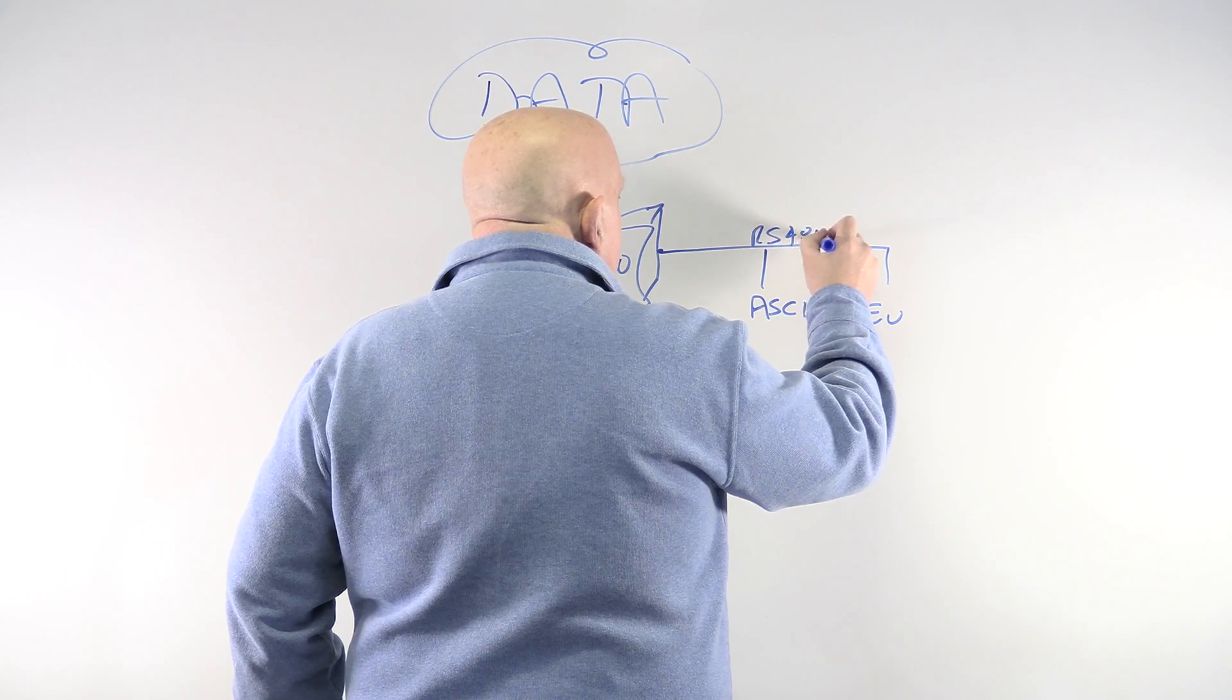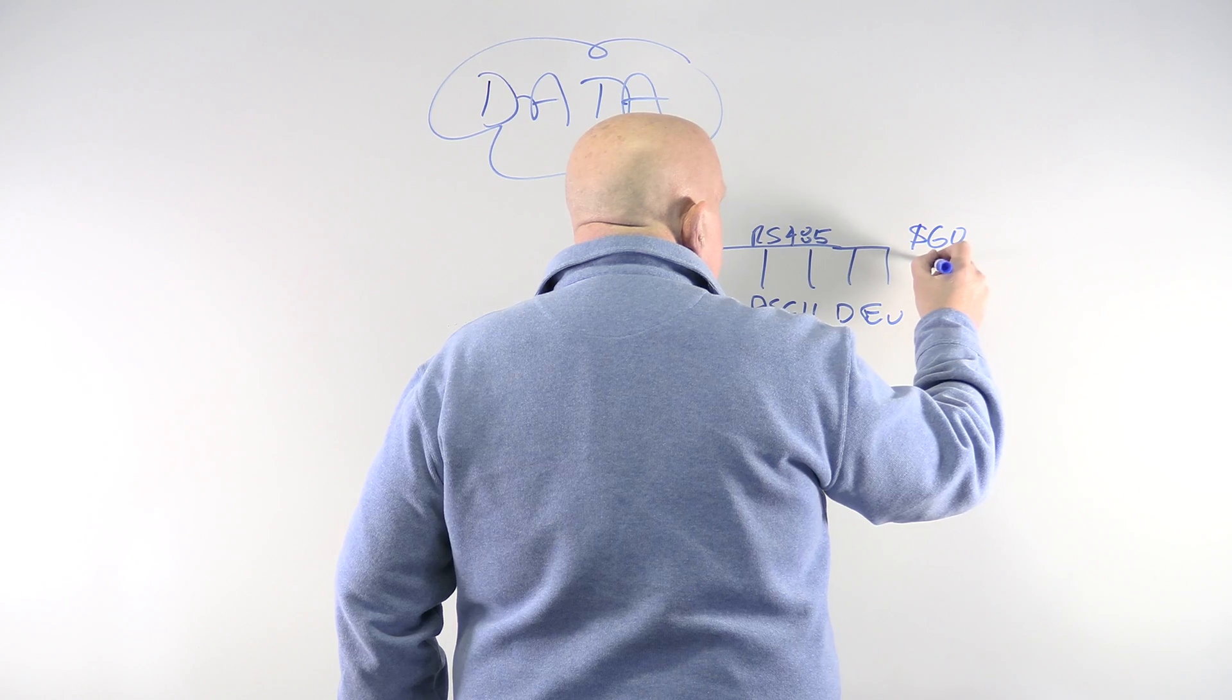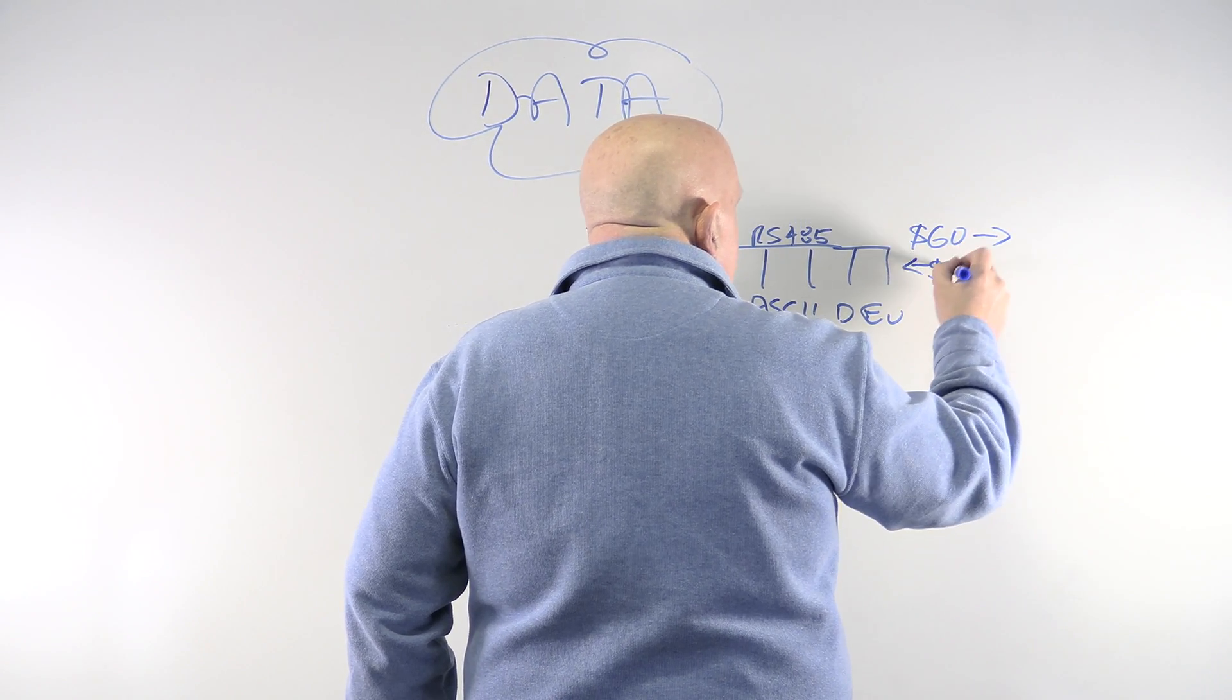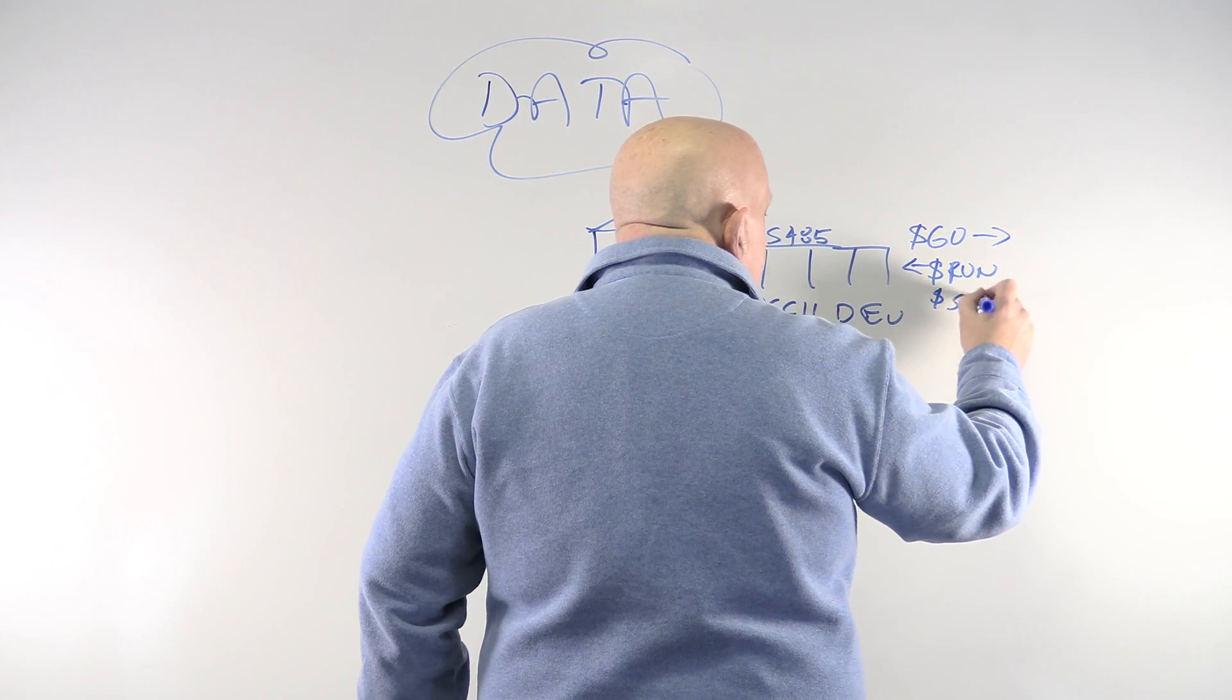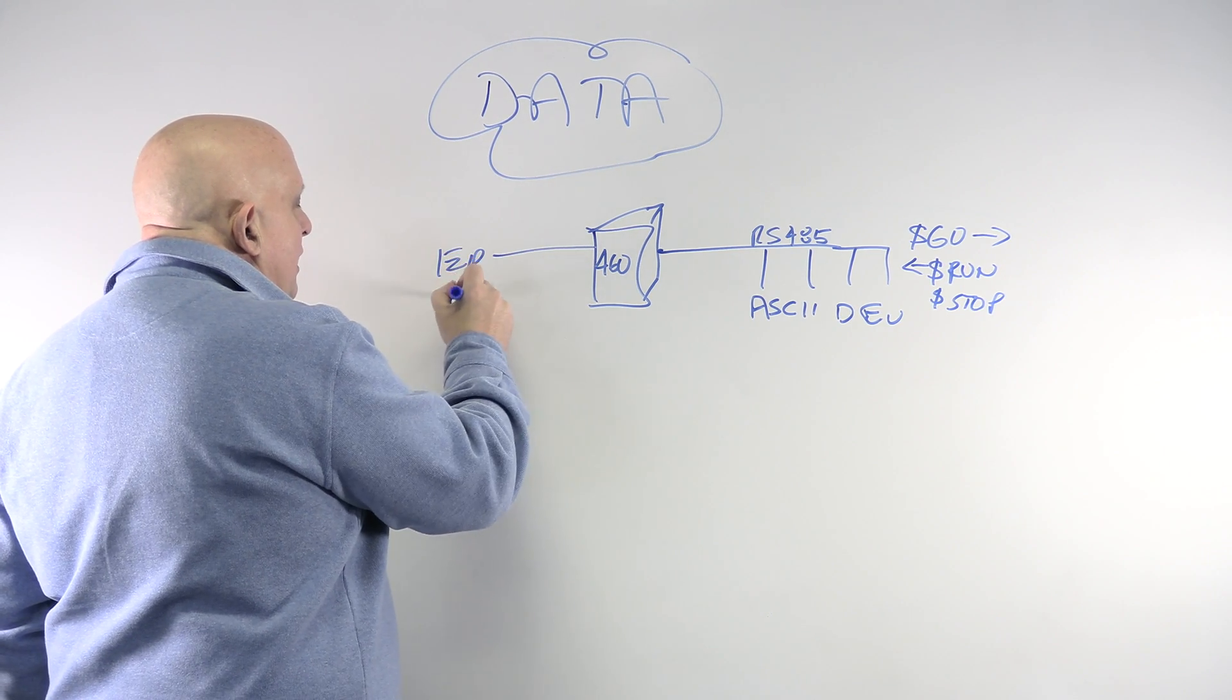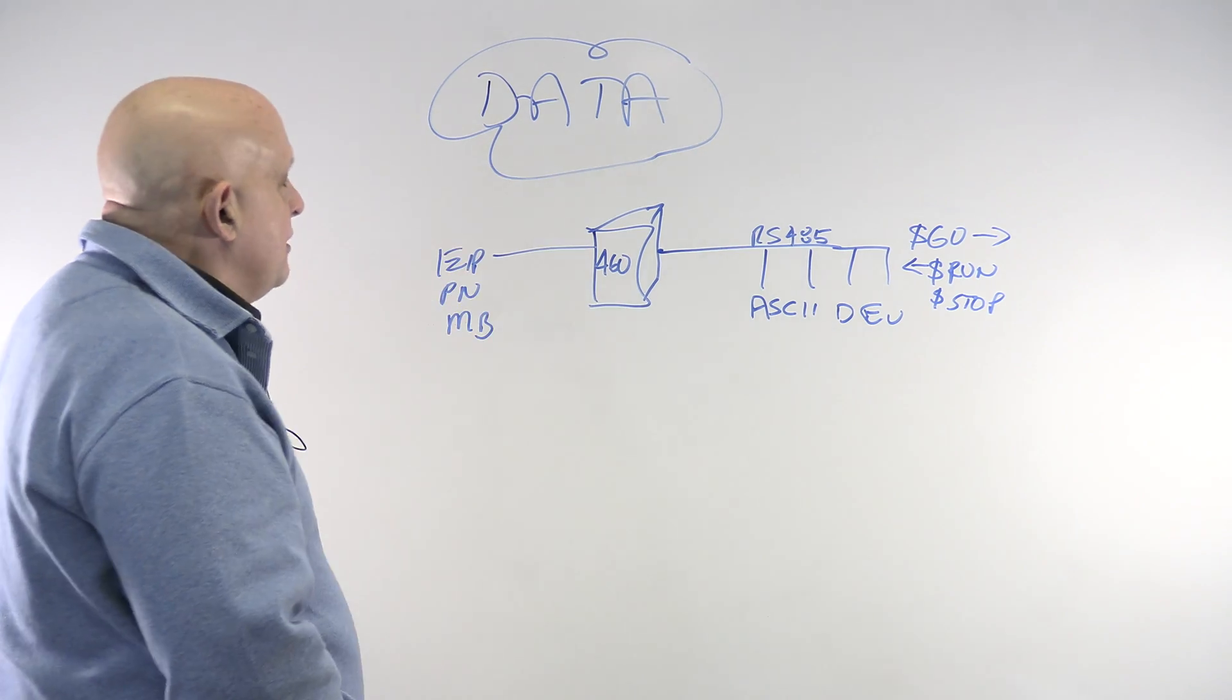and you have some kind of weird protocol that sends a dollar sign go out and gets a dollar sign run back or dollar sign stop back, which is pretty weird, we can convert that into Ethernet IP or Profinet or Modbus so that some higher level system can talk to this.